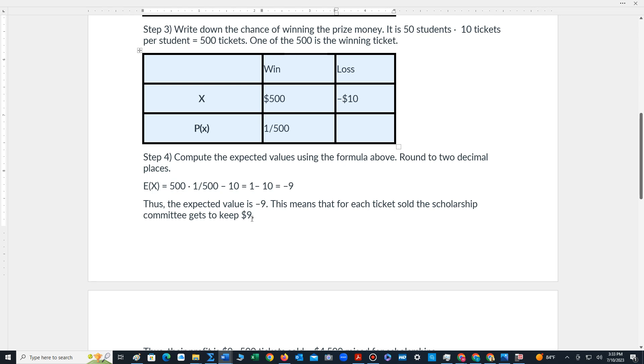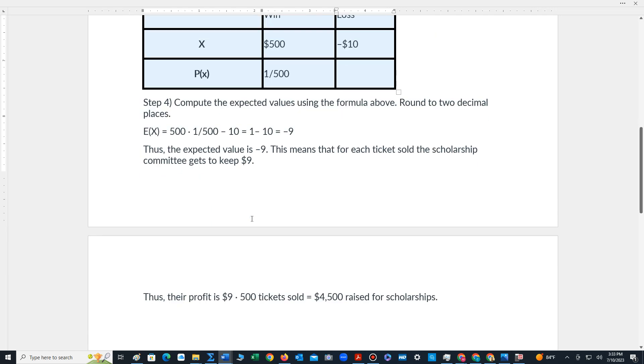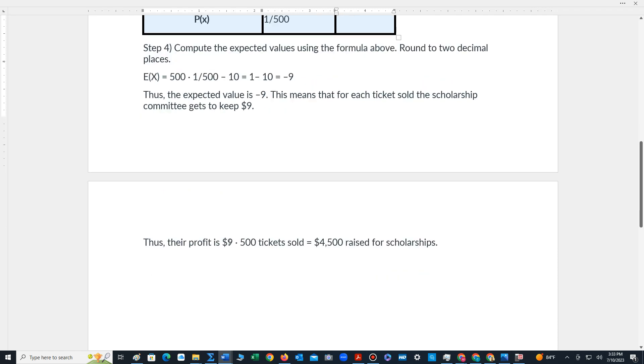Well, that $9 is going to the house. That's going to be the profit that is made by the house. The house is the organization hosting the game. So their final profit would be the 9 times 500, which is the $4,500.